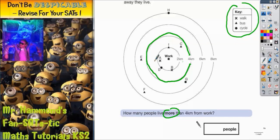So what we've got to assume is that anybody inside the circle lives less than 4 kilometers away from where they work, and anybody outside the circle lives more than 4 kilometers away from where they work. We're asked for more, so we're looking for all the people who are outside of the circle.